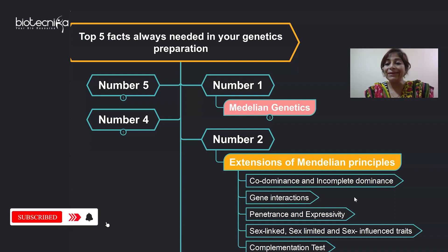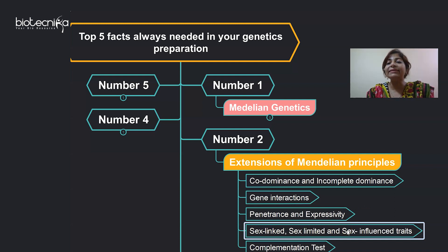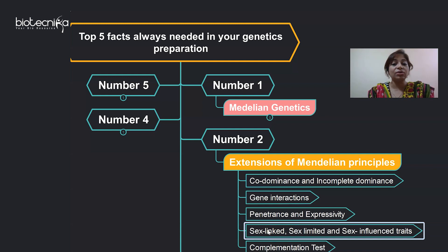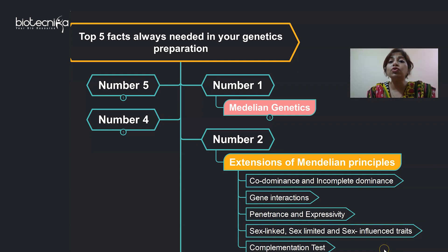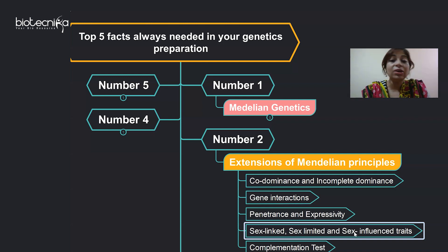You should also understand the concept of penetrance and expressivity. Another very important topic is sex-linked, sex-limited, and sex-influenced traits. Students often get confused and think all of these relate to genes on sex chromosomes — that is absolutely wrong. Sex-linked is the only trait coded by genes present on the X chromosome. Sex-limited and sex-influenced traits are autosomal traits; the genes are on autosomes, but their expression — whether expressed as dominant or not — depends on the gender of the individual.